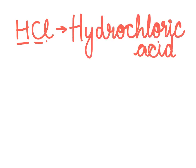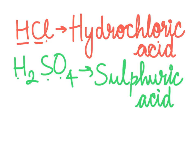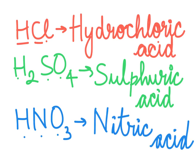Before digging into the topic of acids, you should be familiar with three main mineral acids. The first is HCl — hydrochloric acid. The second is H₂SO₄ — sulfuric acid. The third is HNO₃ — nitric acid. Children, pause this video and memorize all three acids.